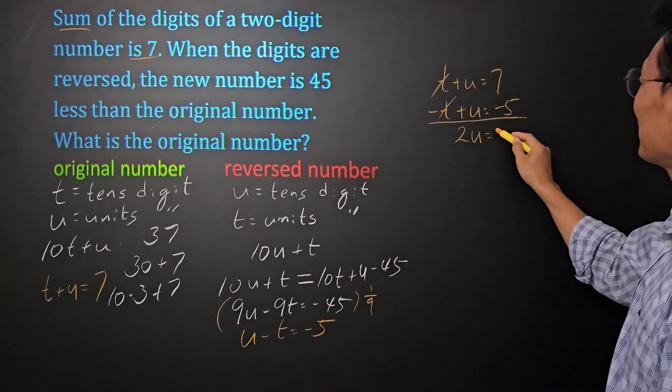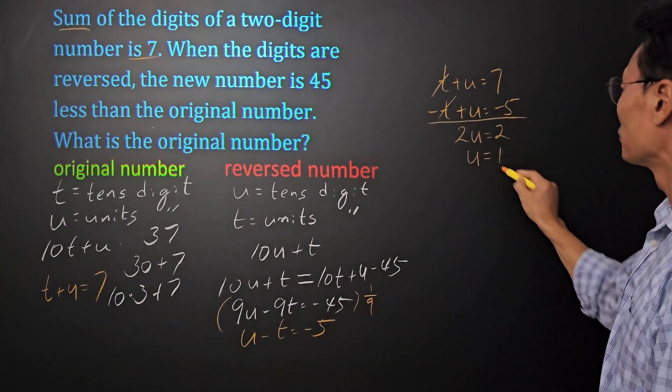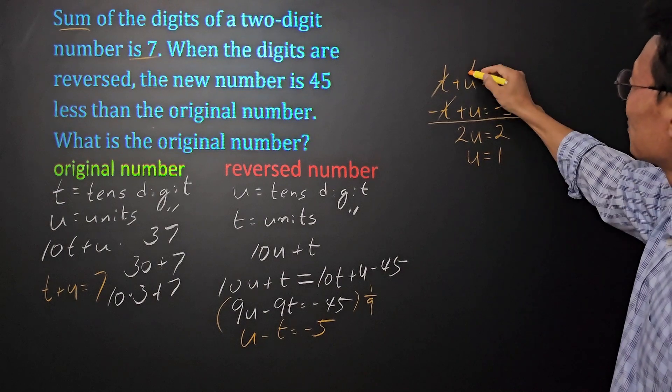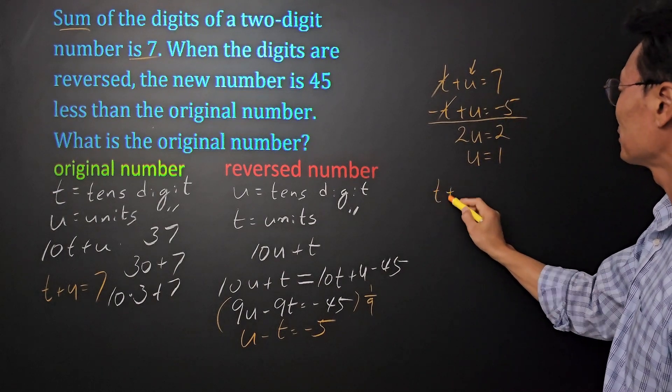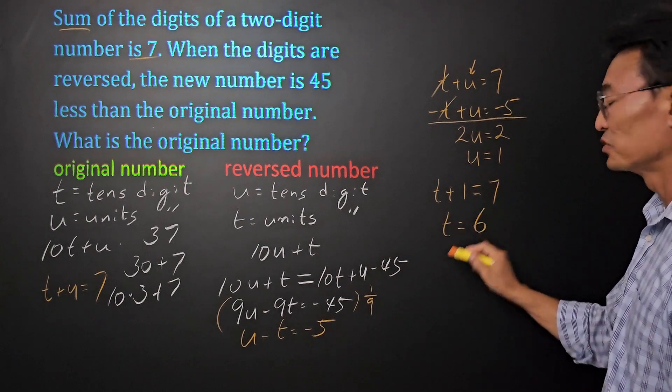And 7 minus 5 we get a positive 2, so u equals 1. Next, if I take that one, plug it back in here, then I get t plus 1 equals 7, or t equals 6.